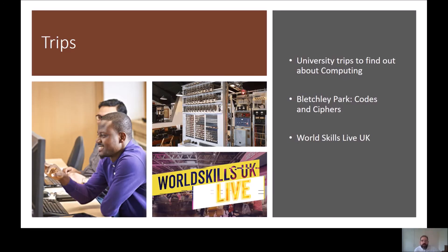For trips, last year we went on a visit to Anglia Ruskin University to find out about their computing degree. Our students were able to find out about artificial intelligence and also look at cyber security. Other trips we're planning include going to Bletchley Park to find out about codes and ciphers, which links well with Unit 7, and our students also go to WorldSkills Live UK to find out about different jobs and apprenticeships in computing.